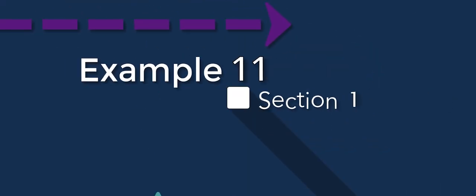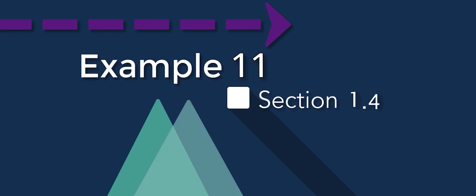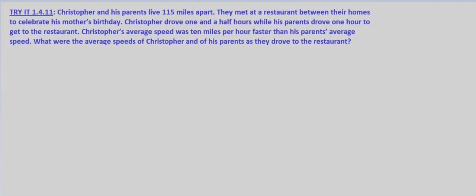So in this problem we're told that Christopher and his parents live 115 miles apart, so let's go ahead and write that down. We'll have Chris on one end, his parents on the other end. We know this is 115 miles. They met at a restaurant between their homes to celebrate his mother's birthday. Chris drove one and a half hours.